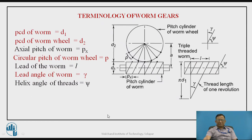As you know, a worm gear consists of a worm wheel and a worm. The worm is essentially a screw and the worm wheel has helical teeth, and that's why the terminology includes terms for the thread and terms for the gear teeth.